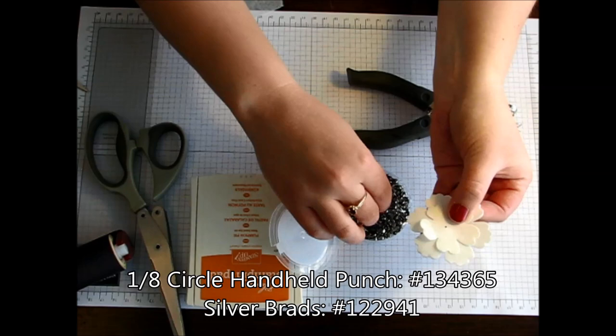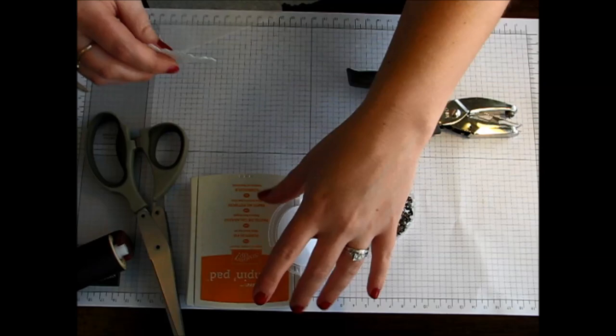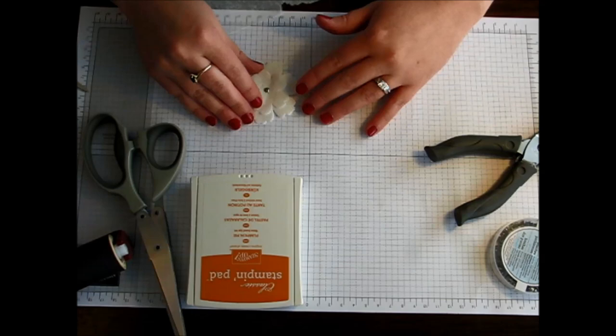Then I'm just going to add a brad to that center hole. These are just some of my silver brads. Go ahead and open up that brad on the back side. Better close those before I spill them. So now you have your little flower.